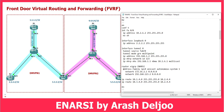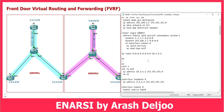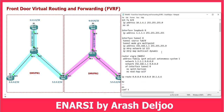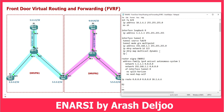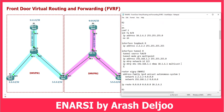Also, router EIGRP NRC address family IPv4 unicast autonomous system 1, network 2.2.2.2 0.0.0.0, and network 192.168.10.2 0.0.0.0. Then configure one default route: IP route 0.0.0.0 0.0.0.0 next hop 10.2.6.6. Because we want to use phase 3, we should configure IP NHRP redirect on the hub router, and on Router 2 configure IP NHRP shortcut.